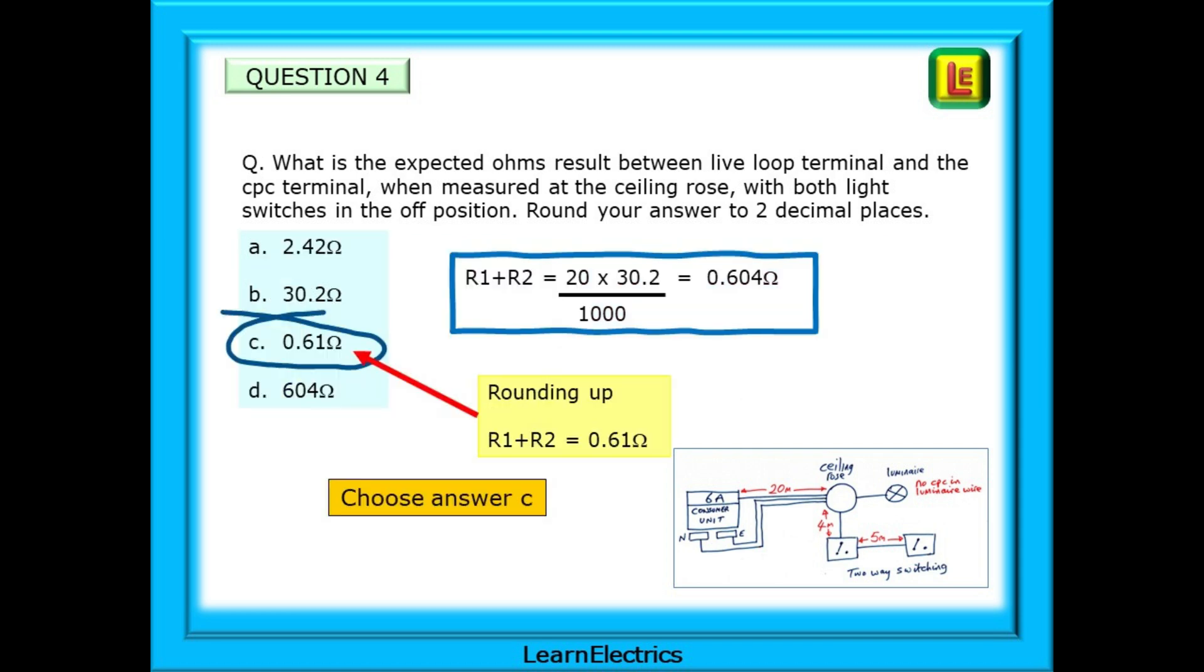Here is the equation. 20 multiplied by 30.2 and divided by 1000. Our answer is 0.604 ohms. We can round this up to two decimal places and we have 0.61 ohms. This is our answer and we should choose answer C.